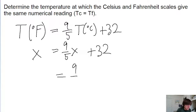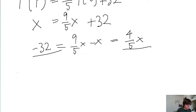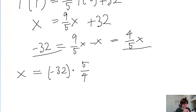One side of the equation becomes 9 fifths x minus x, and the other side becomes negative 32. Now 9 fifths x minus x is just 9 fifths minus 1, which equals 4 fifths x. To solve for x, we divide both sides of the equation by 4 fifths. So x equals negative 32 multiplied by 5 fourths — it gets flipped because we're dividing — and this is equal to negative 40.